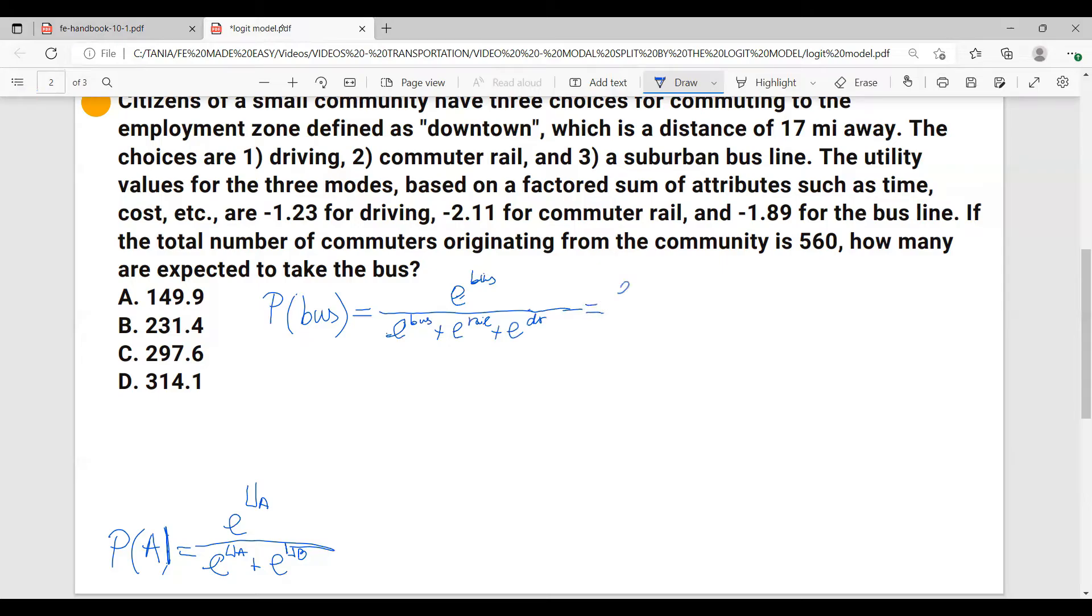And in our case, we'll have E. Let's see what is the coefficient for the bus. It is -1.89, -1.89 over E again, -1.89 plus. Next, we have the rail. For the commuter rail, we have -2.11 plus E. And the coefficient for the driving is -1.23, -1.23.